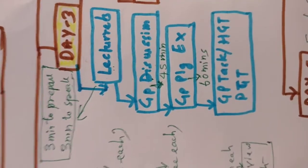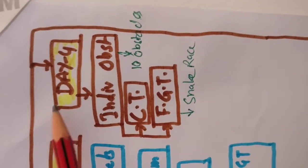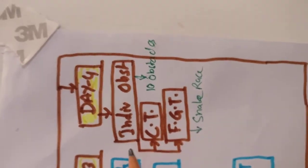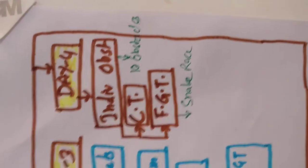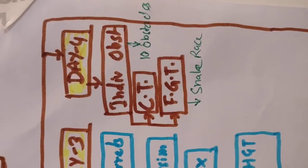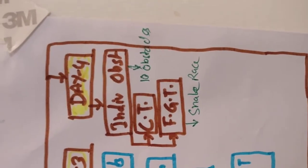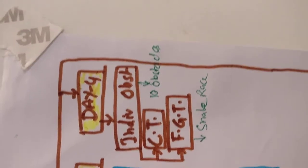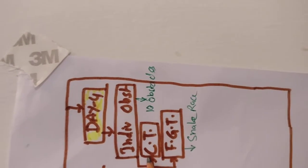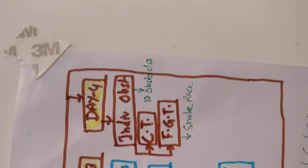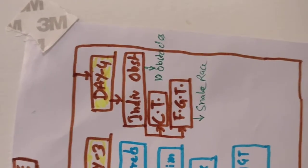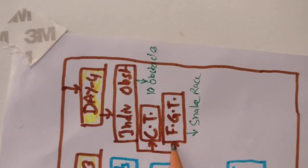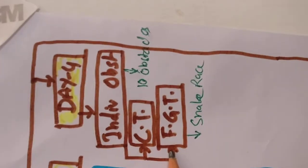Now coming over to Day 4, this is purely outdoor activities of GTO. First you have individual obstacles - there are ten obstacles like rope and ditch, then dodge and jump, etc. Then there's a command task, again it's an obstacle crossing task like your group task HGT and PGT. And then there's a final group task, this is also called snake race.